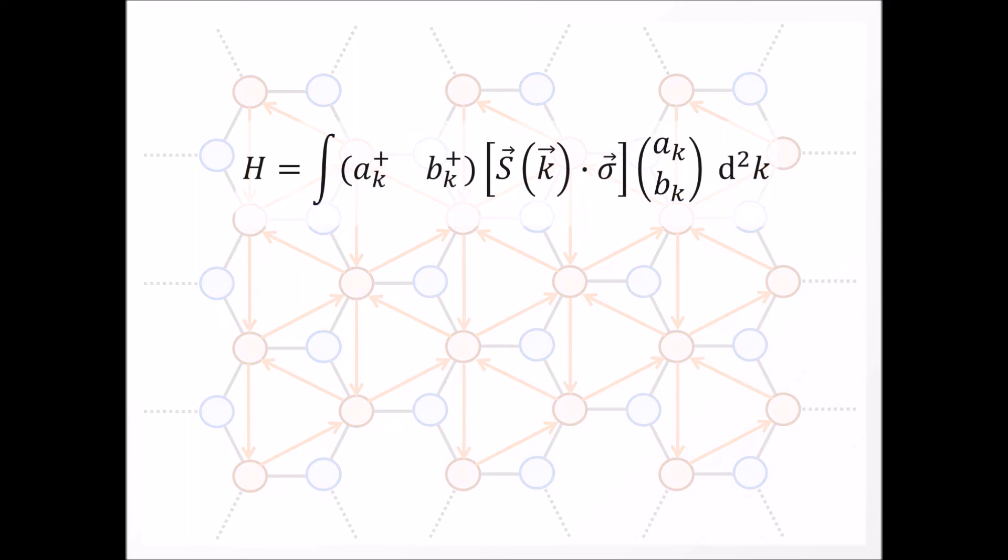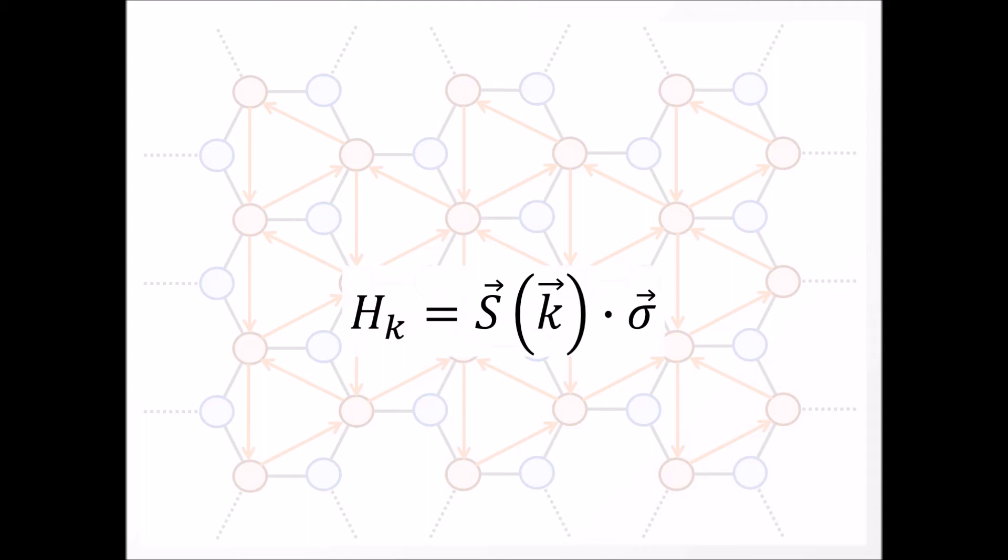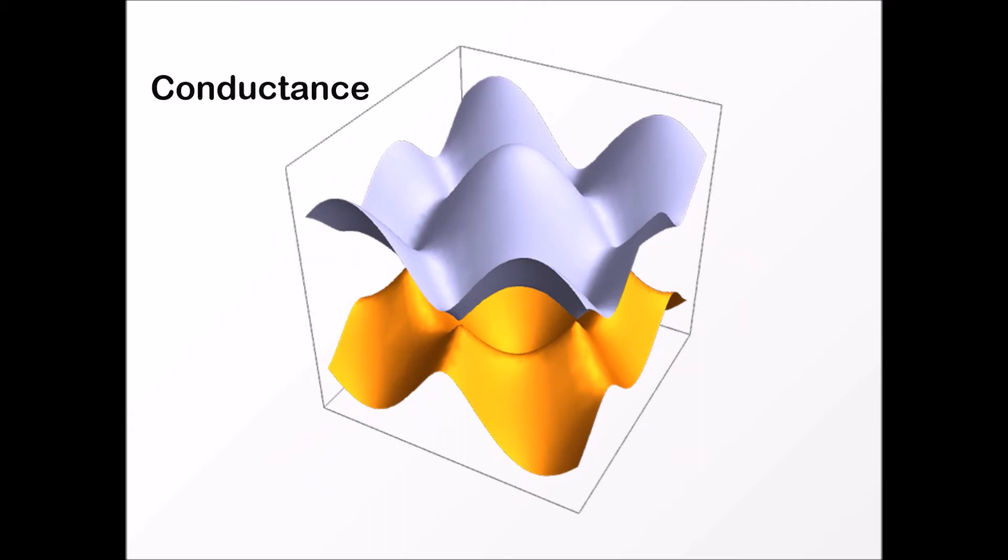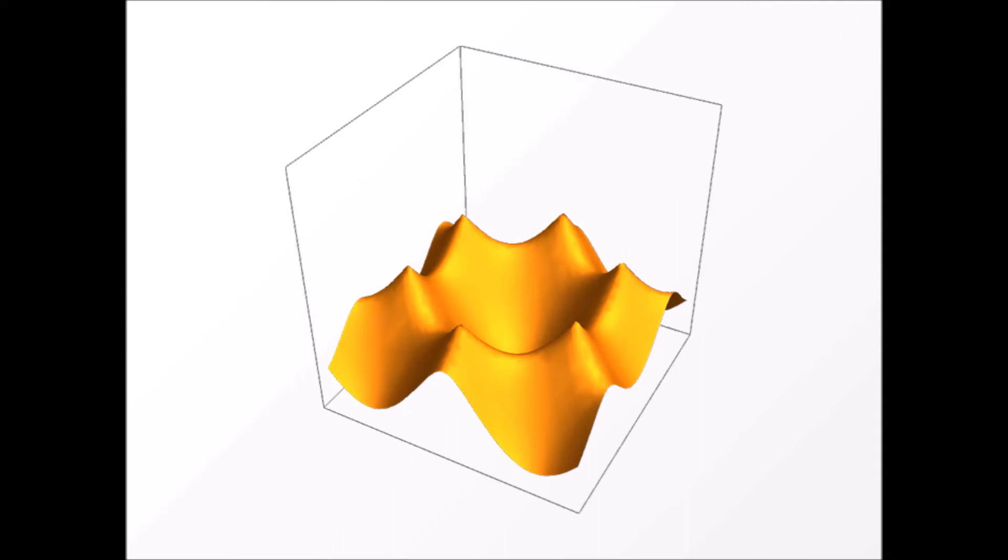Hence, the single particle Hamiltonian of the model obtained by a Fourier transformation is given in terms of a two-by-two matrix. The energy dispersion relation of the model across the Brillouin zone is given by a single conductance and a single valence band depicted here by blue and red colors respectively. The ground state of the model is obtained by occupying, with fermions, all the negative energy states.